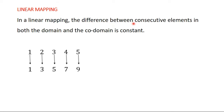When you say consecutive elements — one, two — after one you get two, after two you get three. So two is said to be consecutive after one. Consecutive elements means from one you move to two, from two you move to three. That is what you refer to as consecutive.